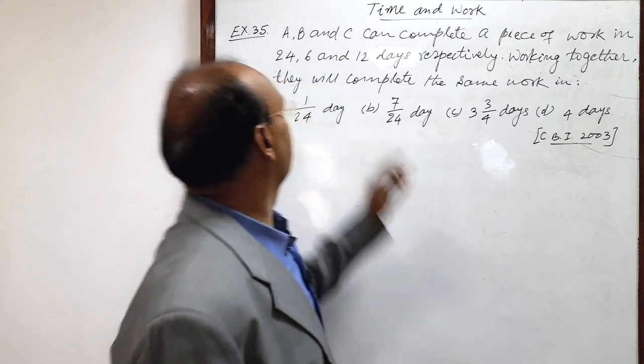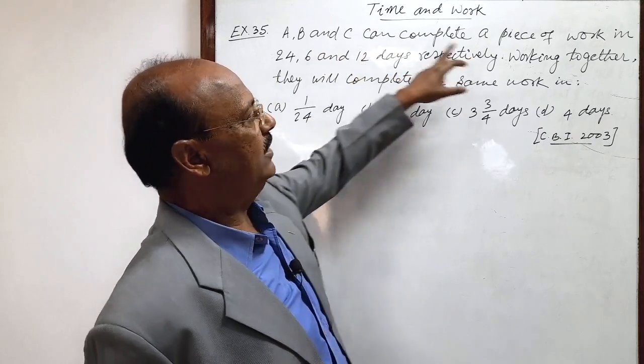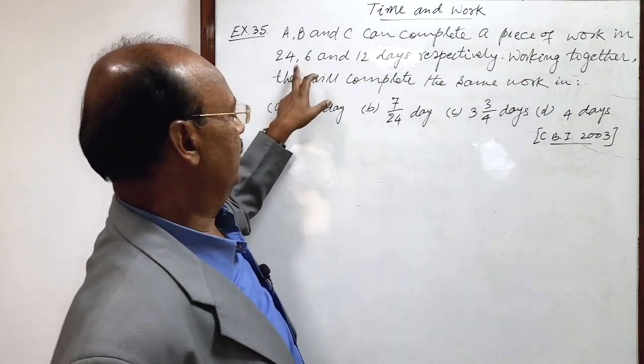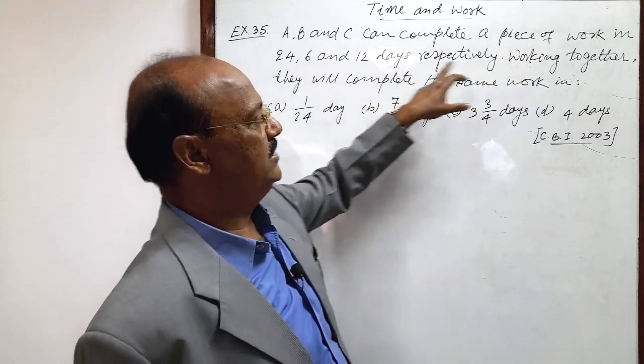Here question is, A, B and C can complete a piece of work in 24, 6 and 12 days respectively.